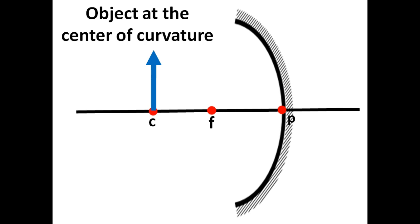As always, we will make a ray from the head of the object that is parallel to the principal axis. And after reflection on the mirror, it will pass through the principal focus. Correct.